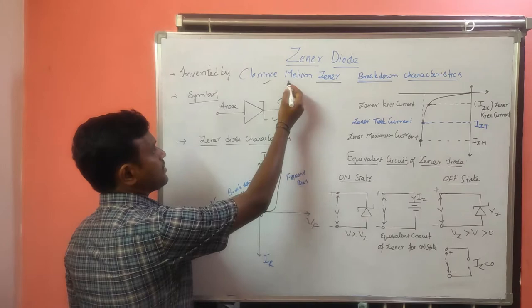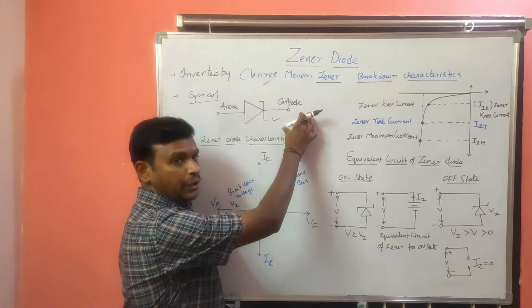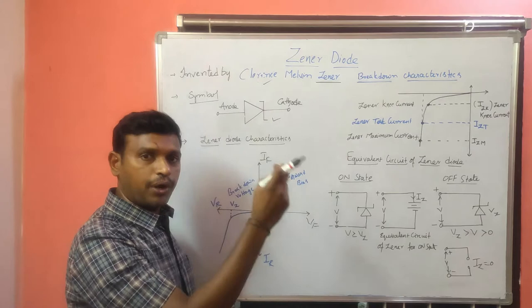On the scientist's name, this diode is given as the GINA diode. In this GINA diode, the doping concentration is very high. And this GINA diode can be operated in the reverse bias condition.